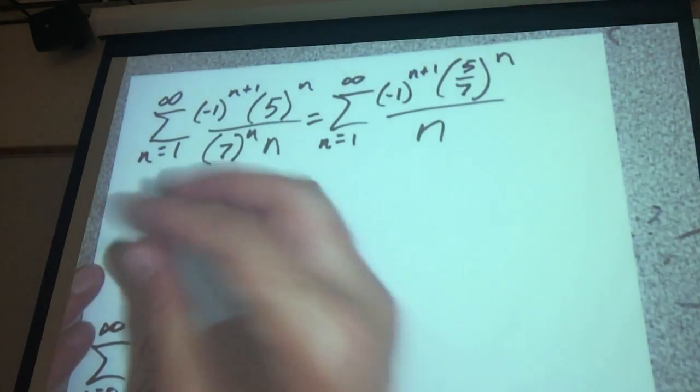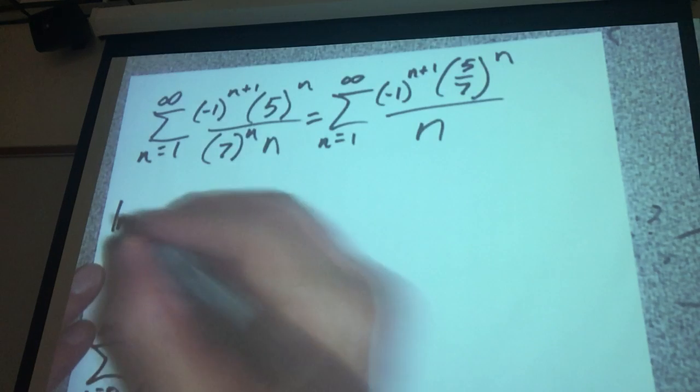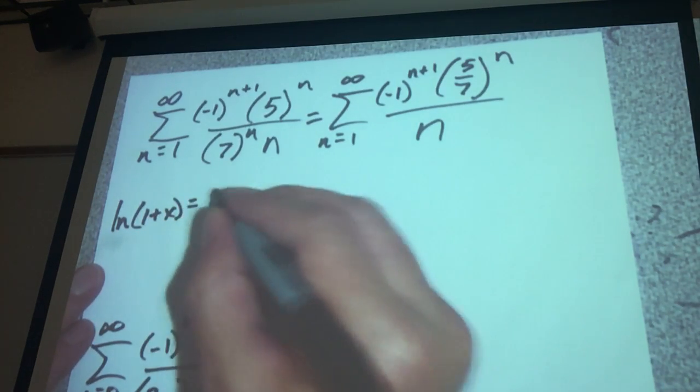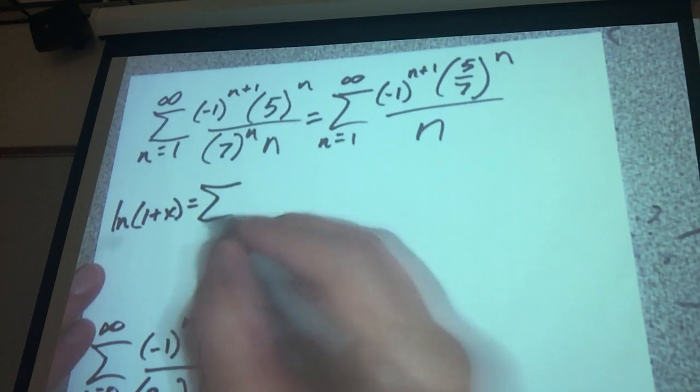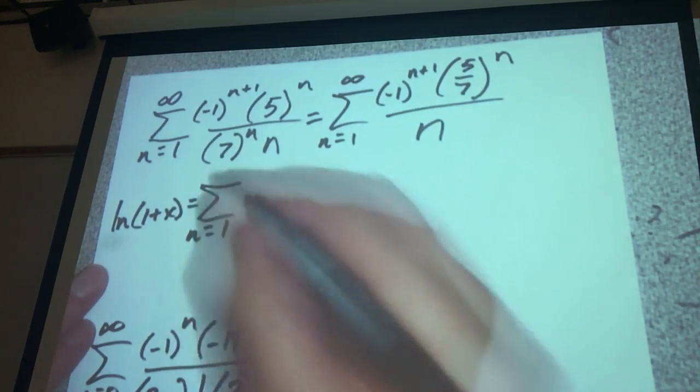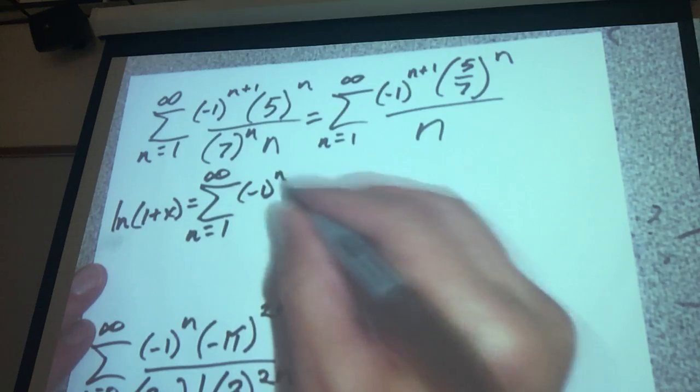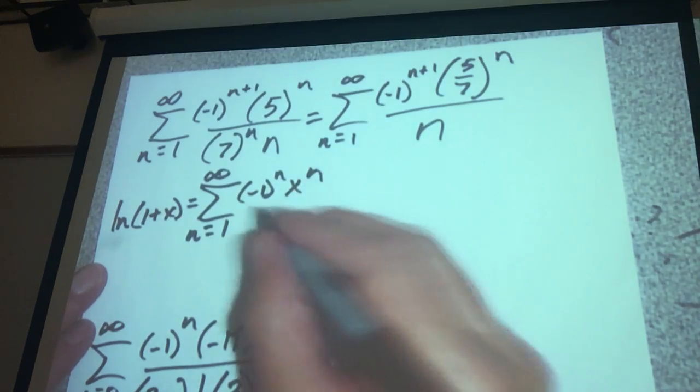Now one thing to notice is that the natural log of 1 plus x equals the sum n which equals 1 to infinity of negative 1 to the n, and x to the n divided by n.